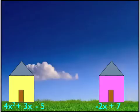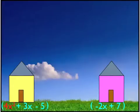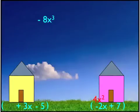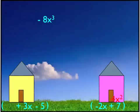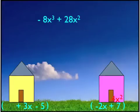We're going to distribute each term in the first polynomial to each term in the second polynomial. Starting with 4x squared: 4x squared times negative 2x gives us negative 8x to the third — because 4 times negative 2 is negative 8, and x squared times x is x to the third. But he's not done; he has to greet everybody in the second house. So 4x squared times 7 is 28x squared. And then he's done.